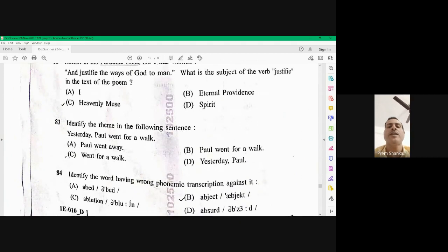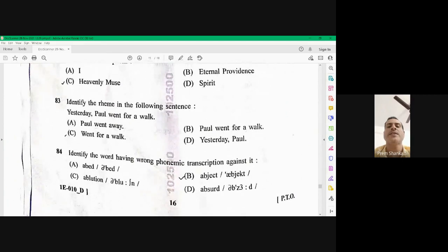Question number 84. Identify the word having a wrong phonetic transcription. The wrong transcription B. Object. Object is not written like this. B is the right option here in 84.